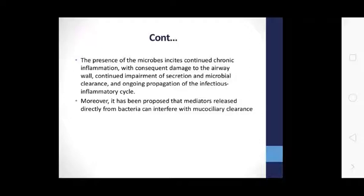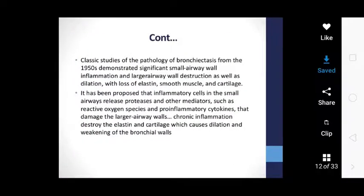Moreover, it has been proposed that mediators released directly from bacteria can interfere with mucociliary clearance. Classic studies of the pathology of bronchiectasis from 1915 demonstrated significant small airway wall inflammation and large airway wall destruction, as well as dilation with loss of elastic smooth muscle and cartilage. Inflammatory cells of the small airway release proteases and reactive oxygen species as well as pro-inflammatory cytokines that damage the larger airway walls.